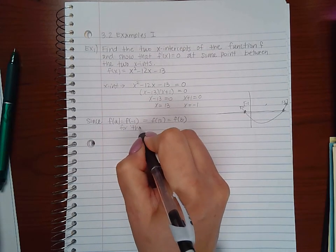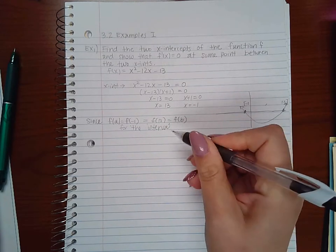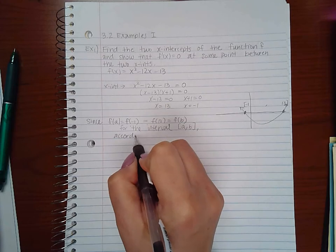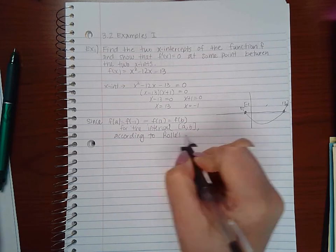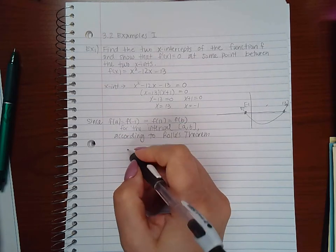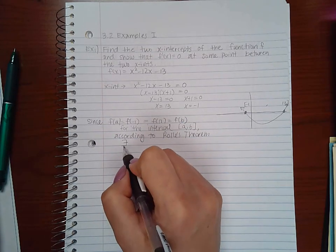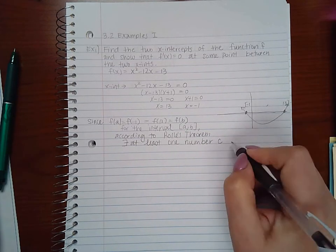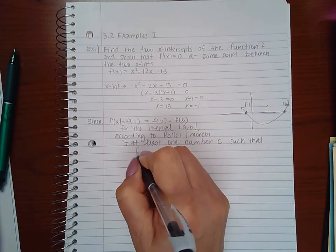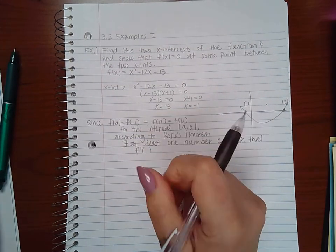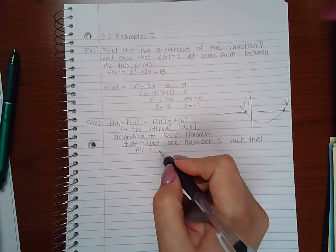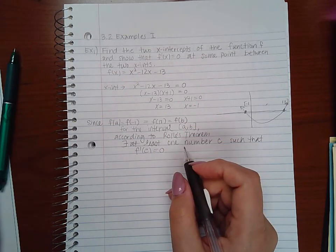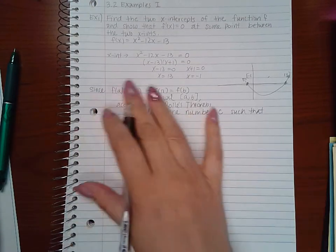For the interval [a,b], according to Rolle's theorem, there exists a value of c. This is the symbol for there exists. So we're going to see that's the theorem, what the theorem tells us.